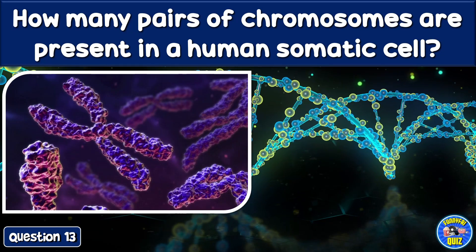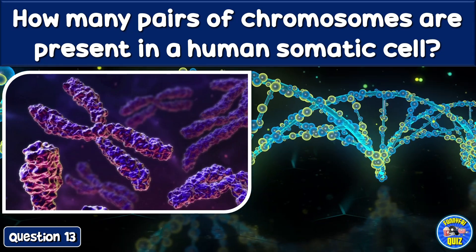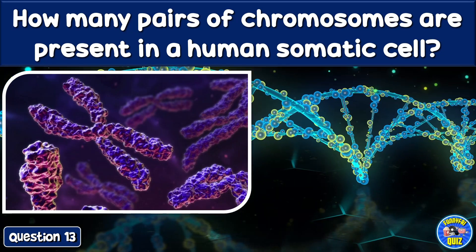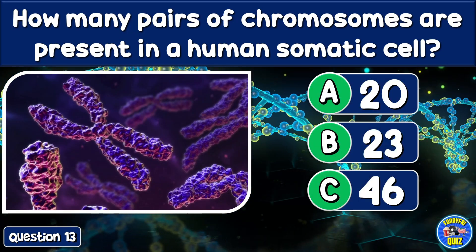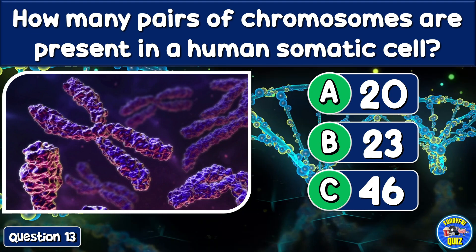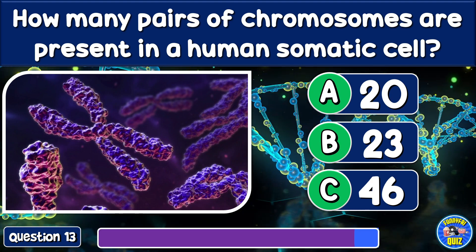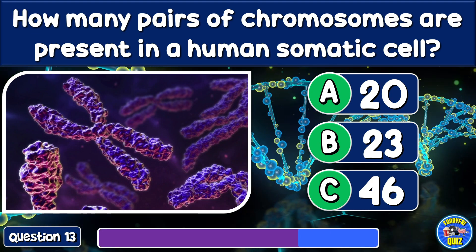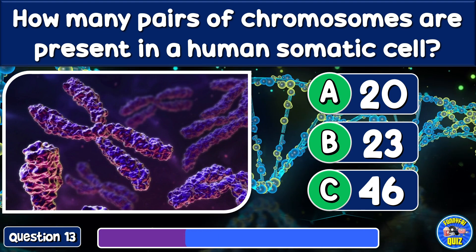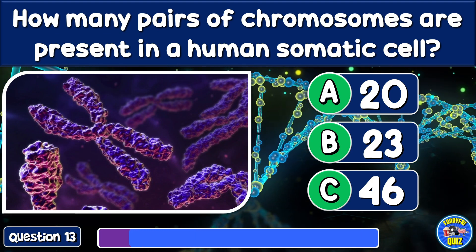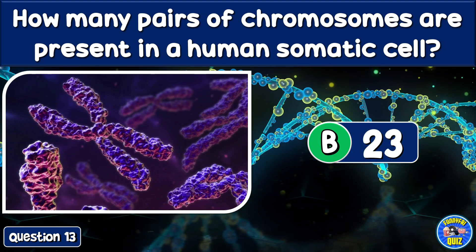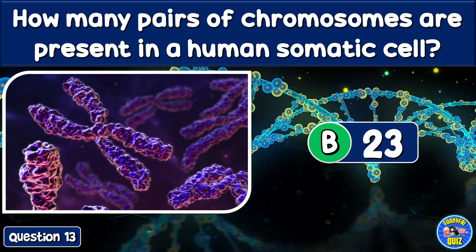How many pairs of chromosomes are present in a human somatic cell? 20, 23, or 46? 23 pairs of chromosomes.